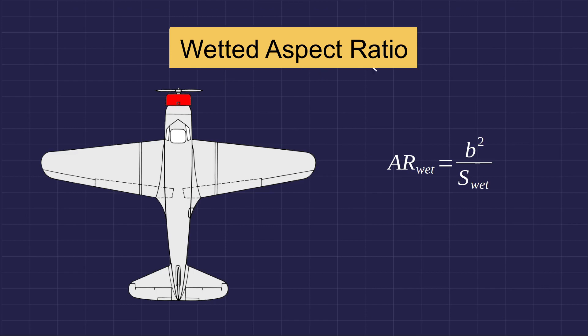The wetted aspect ratio considers the whole wetted surface area of the airframe rather than just the wing. Where B is the span and S_wet is the wetted surface, which is the surface in contact with external airflow. It is possible for two aircraft — one with high aspect ratio and one with low aspect ratio — to have similar wetted aspect ratios. The wetted aspect ratio is a better measure of aerodynamic efficiency of an aircraft than the wing aspect ratio alone.